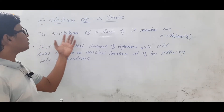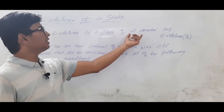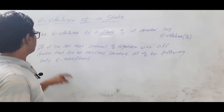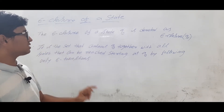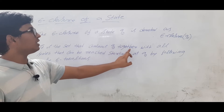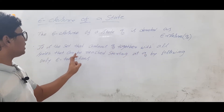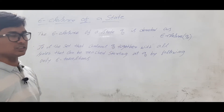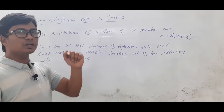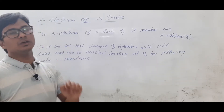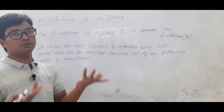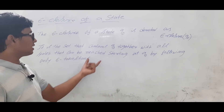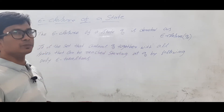The epsilon closure of any state q0 is denoted as epsilon-closure(q0). It is the set that contains q0 together with all states that can be reached starting at q0 by following only epsilon transitions. Please remember that whenever we are calculating epsilon closure of q0, q0 will always be included, because from q0 on epsilon you go to q0 itself.